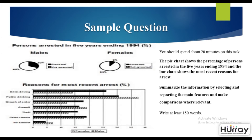When doing this task, remember you have 20 minutes. Read the title and the task given very carefully — you have to write the main features. You must write at least 150 words as a minimum, although you are suggested to write 160 to 180 words. Let us move further and look at the sample answer.